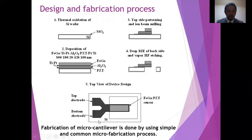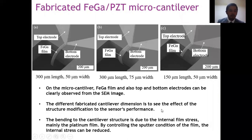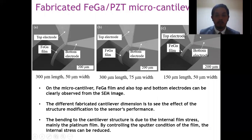The top view of the device design can be seen in this figure. These are the fabricated Galphenol PZT micro cantilever. The cantilevers are successfully fabricated as seen on the SEM image. You can see the Galphenol film, the top electrode, bottom electrode, all in the SEM images. The different fabricated cantilever dimension is to see the effect of the structure modification to the sensor's performance. Bending to the cantilever structure is due to the internal film stress, mainly the platinum film. By controlling the sputter condition of the film, the internal stress can be reduced.